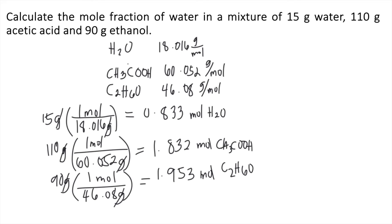Now that we got the moles of each substance, we can now compute for the mole fraction of water. The symbol for mole fraction is chi. Mole fraction of water is equal to the moles of water divided by the total moles in the mixture. Moles of water, we got that a while ago, that's 0.833 moles, divided by the total moles in the mixture.